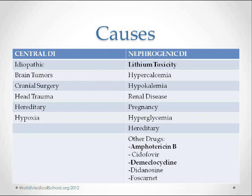Other causes of nephrogenic DI include electrolyte disturbances like hypercalcemia or hypokalemia, renal diseases, pregnancy — which could be temporary as it may resolve spontaneously after pregnancy — hyperglycemia, hereditary, and drugs, among which amphotericin B and demeclocycline are highly tested.